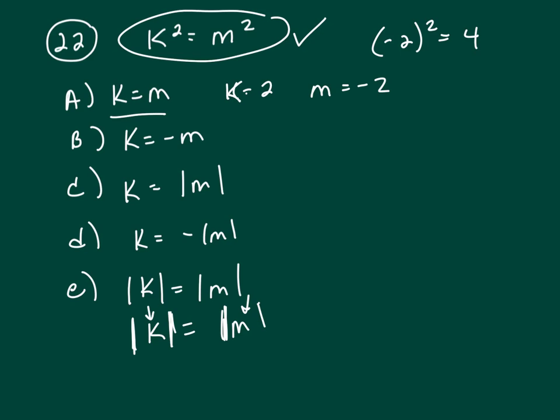You might want to look at another one. Like, look at number C, k equals absolute value of m. Well, we know k squared equals m squared, but we could let k equal, let's say, negative 2.